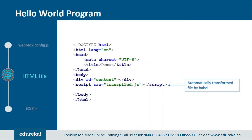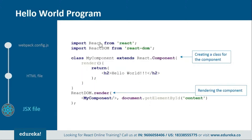Next we have the HTML file. This is the basic HTML file in which we just need to add one div tag and one script tag. Inside the div tag we will provide one ID so that later we can reference it from the JSX file. Then we have the script tag in which we will reference the transpiled file which will be created by Babel. Next we have the JSX file. In this, you need to import React and ReactDOM from their respective directories, and then create a component — you can name it anything — which should extend React.Component, because in React everything is a component.